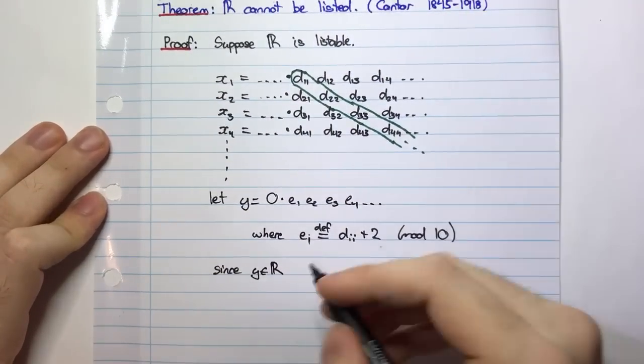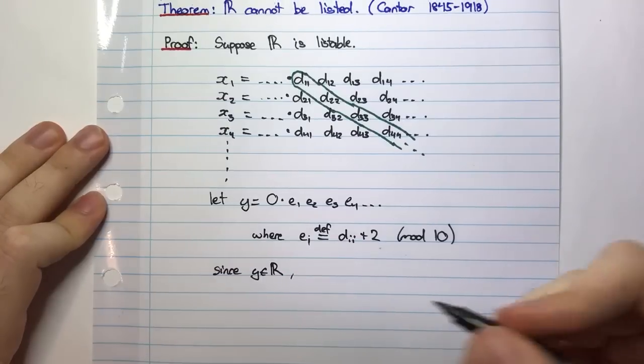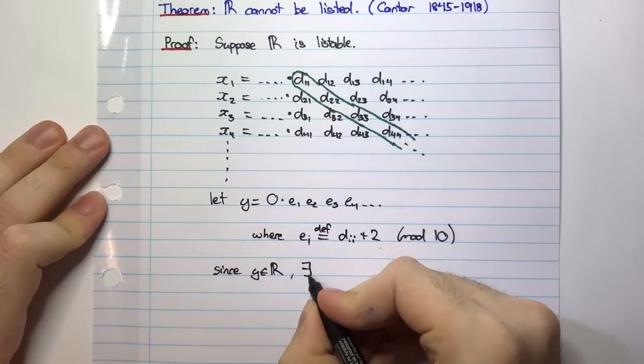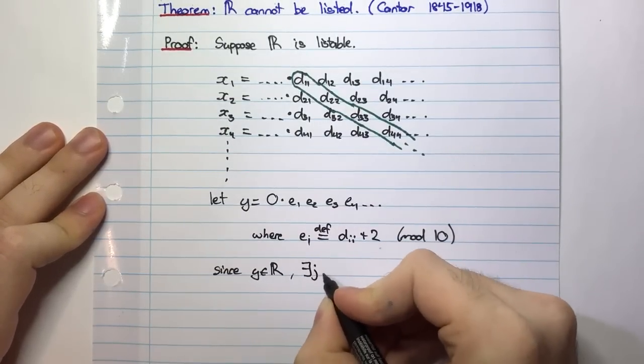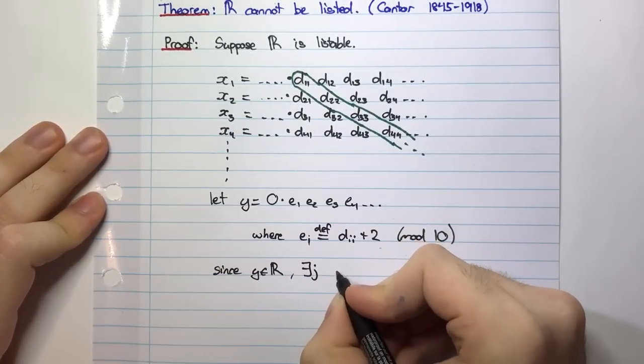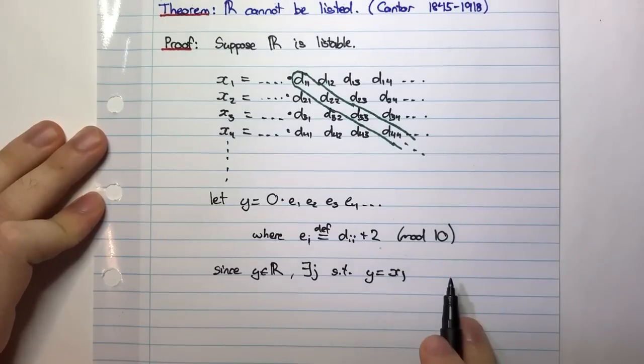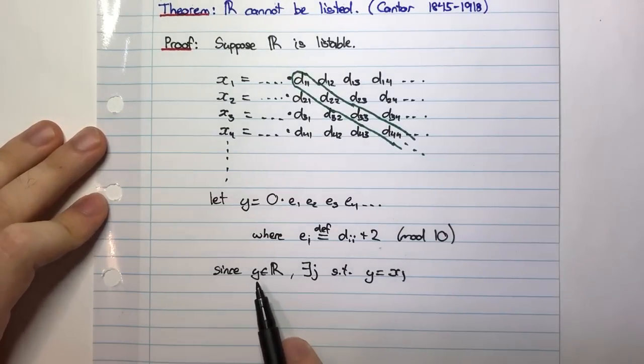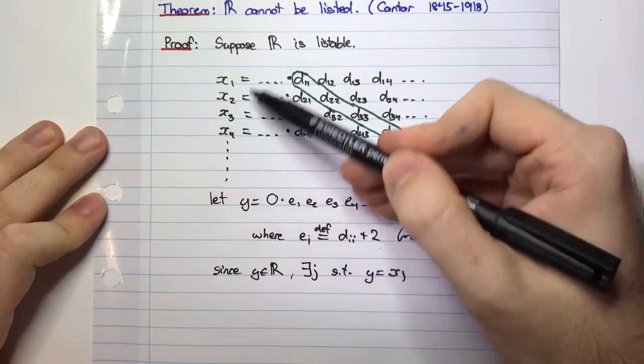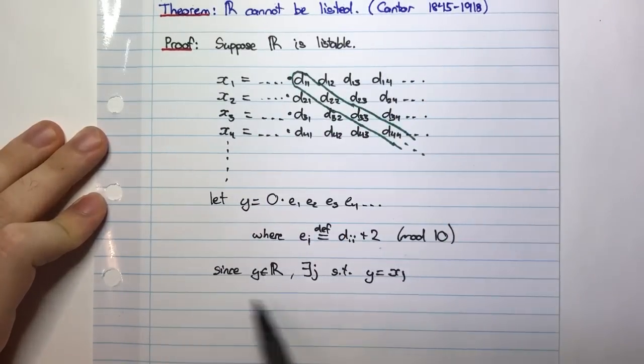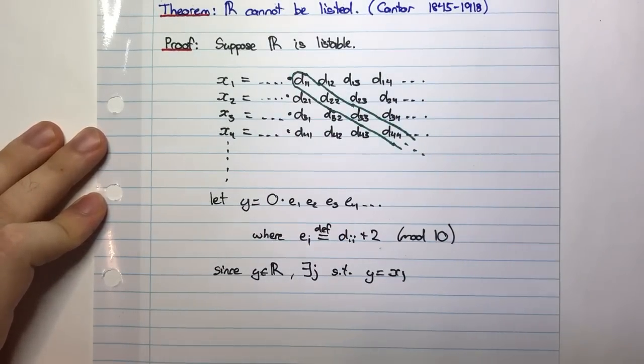that means that there must be some J, there exists some J, such that Y is equal to XJ. So what does this statement mean? All it means is if Y is a real number, it should be contained in this list that I've got here. That's all this statement means. It's just a formal way of writing it with mathematical notation.